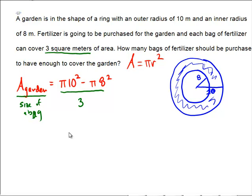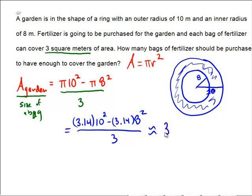Now it turns into a calculator problem. We'll use 3.14 as an approximation for π. We'll go 3.14 × 10² - 3.14 × 8² all over 3. Taking that and dividing it by 3. And hopefully if you did this on a calculator, you're getting an answer that comes out to be 37.68 bags.